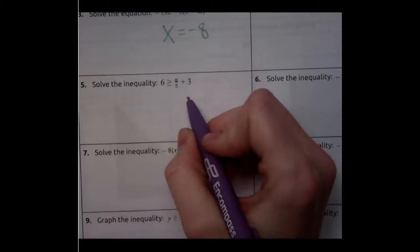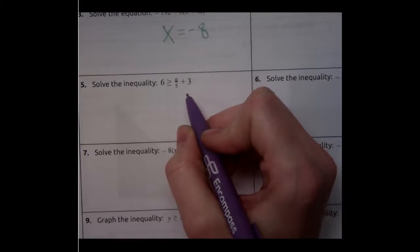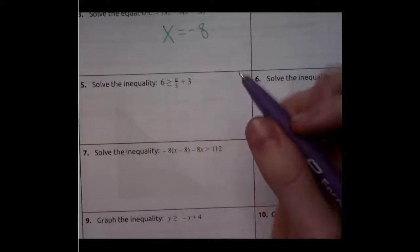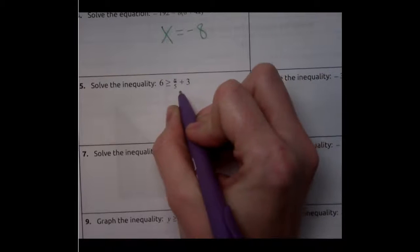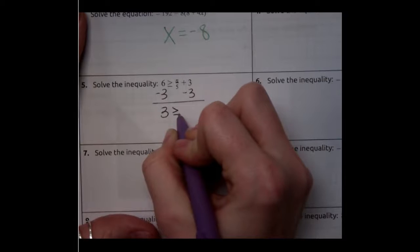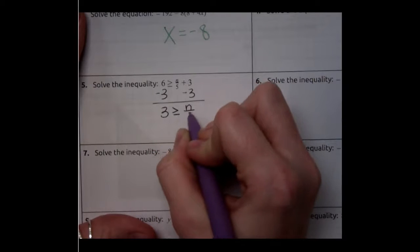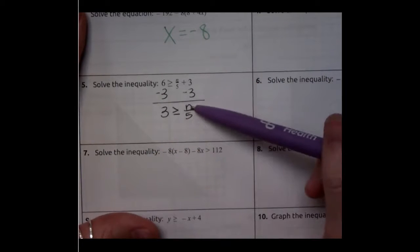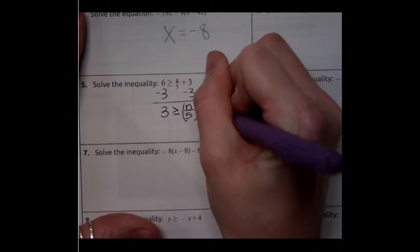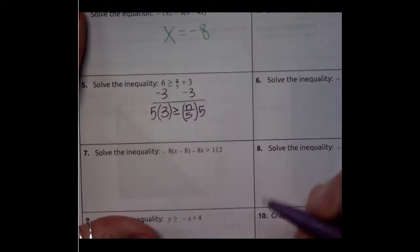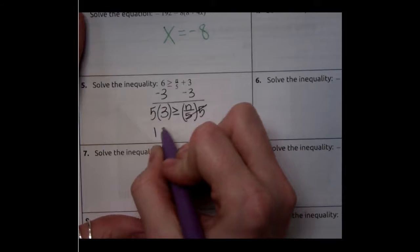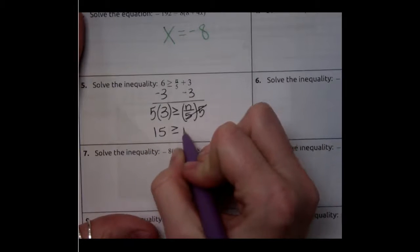So the first thing we're going to do is start getting rid of things that are not with our variable and we have a variable of n. The five is attached to the n, so I'm going to get rid of this plus three. To get rid of plus three I'm going to subtract three on both sides. Three is greater than or equal to n over five. Now when we say n over five it really means we're dividing by five. So to get rid of dividing by five I'm going to multiply by five because that is the opposite of dividing. These are going to go away turns into a one. So we have 15 is greater than or equal to n.